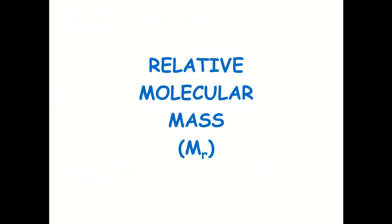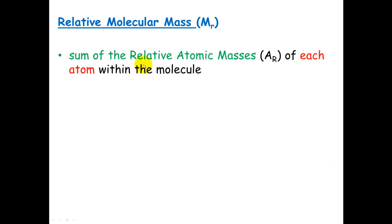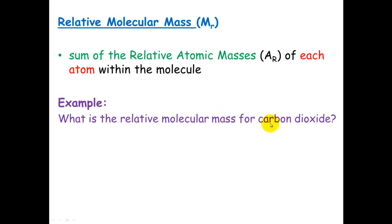To work out the relative molecular mass is quite easy. Now that we know how to work out relative atomic masses, the relative molecular mass is just the sum of the relative atomic masses of each of the atoms within the molecule. Let's look at an example of carbon dioxide. Carbon dioxide consists of one carbon atom and two oxygen atoms. So if we have a look at the periodic table, you'll see that the mass number of carbon is 12, and the mass number of oxygen is 16. So we will use those.